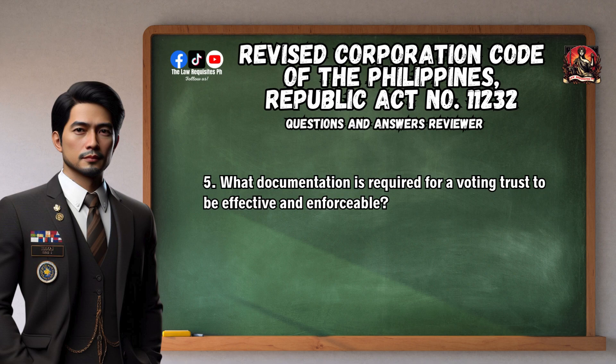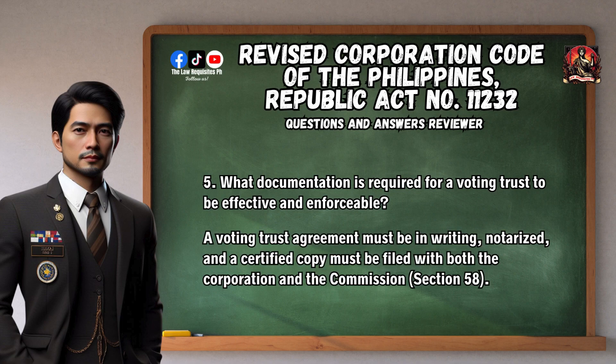Question 5: What documentation is required for a voting trust to be effective and enforceable? A voting trust agreement must be in writing, notarized, and a certified copy must be filed with both the corporation and the commission. Section 58.